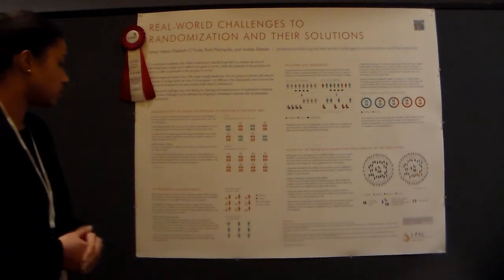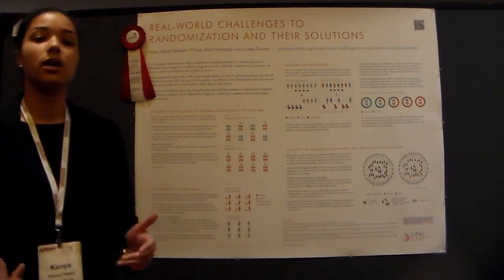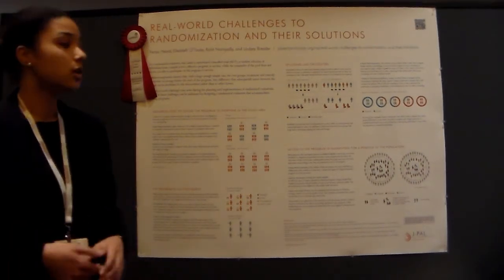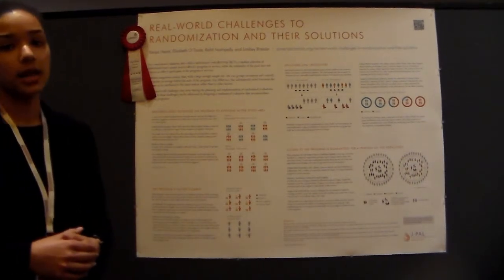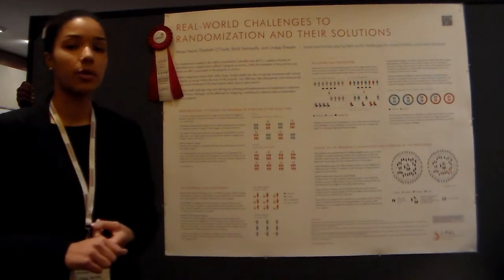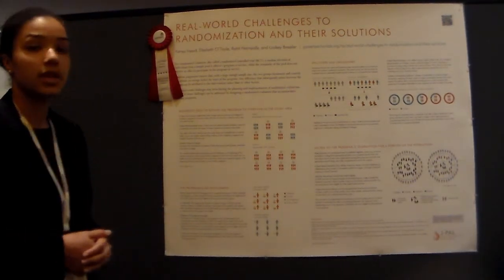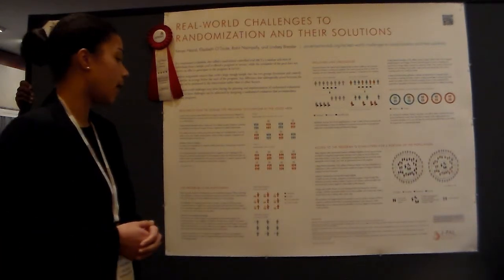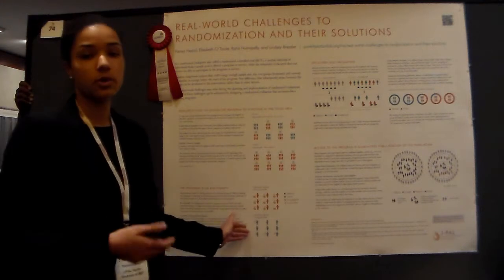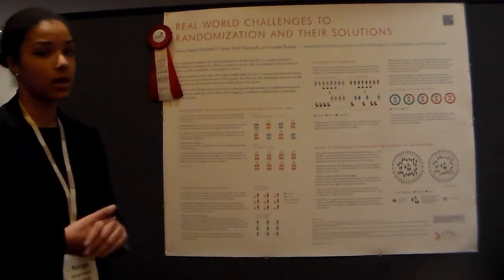The second example is with the SNAP program. With programs that are entitlements, you never want to restrict eligibility criteria that have historically been present for certain vulnerable groups. One way to evaluate these types of programs is through an encouragement design, where you randomly distribute a particular type of encouragement — this may be something as simple as a mailer reminding people of their eligibility and encouraging them to sign up. In this case, you're not restricting access to the program for the control group, but you are administering extra encouragement to get the treatment group to enroll. Over the course of the study, the control group is still able to enroll, but is probably less likely to do so because they haven't received the particular nudge.